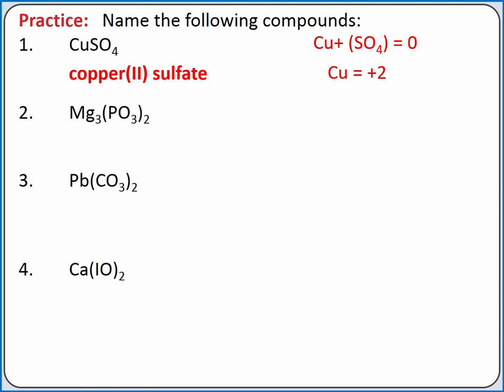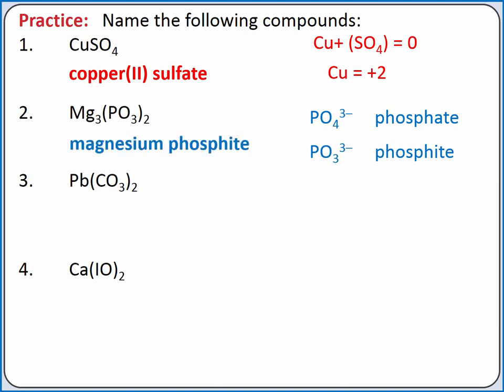For Mg₃(PO₃)₂, magnesium is a type 1 metal, so we don't need to include its charge in the name. PO₃ is not on our list of polyatomic ions, but PO₄³⁻ is phosphate. PO₃³⁻ has one less oxygen atom, so it should be phosphite. Our compound is magnesium phosphite.